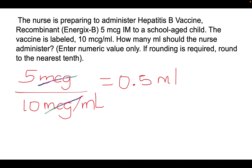The next question is pretty straightforward. The nurse is preparing to administer hepatitis B vaccine 5 mcg IM to a school-aged child. The vaccine is labeled 10 mcg per ml. How many ml should be administered? We highlight 5 mcg and 10 mcg per ml. You take what is required over what is available: 5 mcg over 10 mcg per ml. The mcg cancel and you get 0.5 ml. If you got this answer, that is correct.